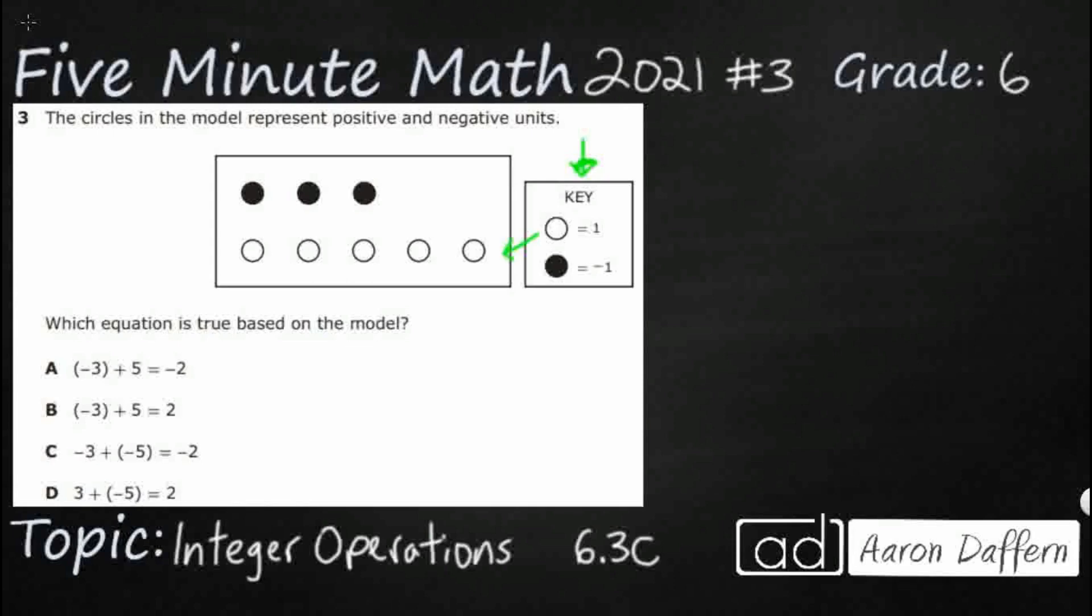So our open dots are going to equal ones. We've got one, one, one, one, one. Our closed dots are going to represent negative one. So even though in our key we have our closed dots on top, in our actual model our closed dots are on the bottom. So that's the one trick that we have to watch out for here. But let's go ahead and label those as negative ones and ones.